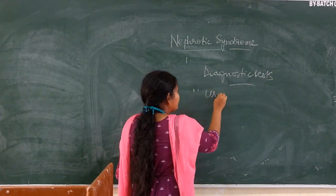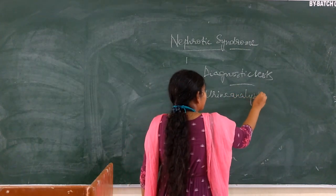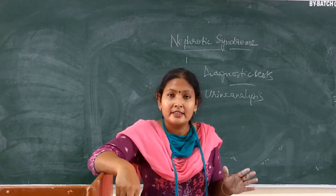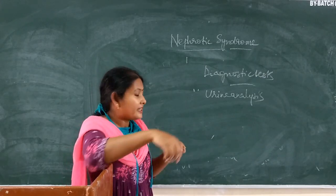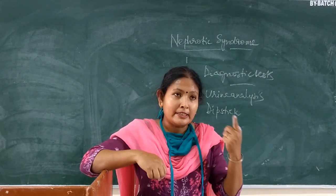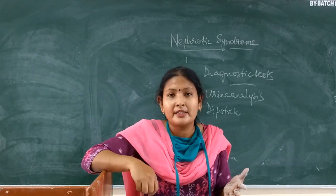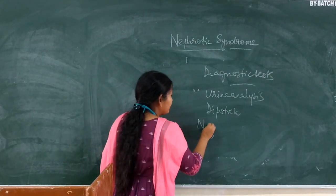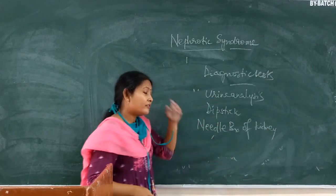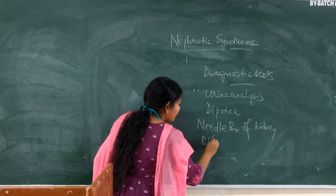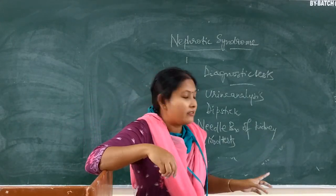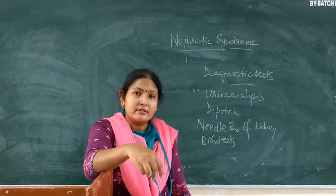Diagnostic tests are: first, urine analysis — a detailed analysis will show that proteins are very high in the urine, around 3.5 grams per day. If doing dipstick analysis, the indication will be around 3+ to 4+, meaning massive proteinuria. The confirmatory diagnosis will be needle biopsy of the kidney. Other tests include blood tests where you can measure serum albumin level as well as serum cholesterol level. The cholesterol level will rise because of increased lipoprotein.